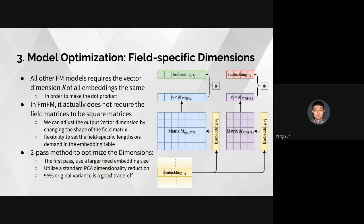For example, the original embedding vi for feature i has dimension five. We can change it to seven (the blue vector) or reduce it to four (the purple vector), then use it for dot products with other features vj and vk at the same dimension. We propose a two-path method: first train with a larger fixed embedding size, then pull the embedding tables as a matrix and apply standard PCA for dimension reduction. We found 95% original variance is a good trade-off between performance and speed.